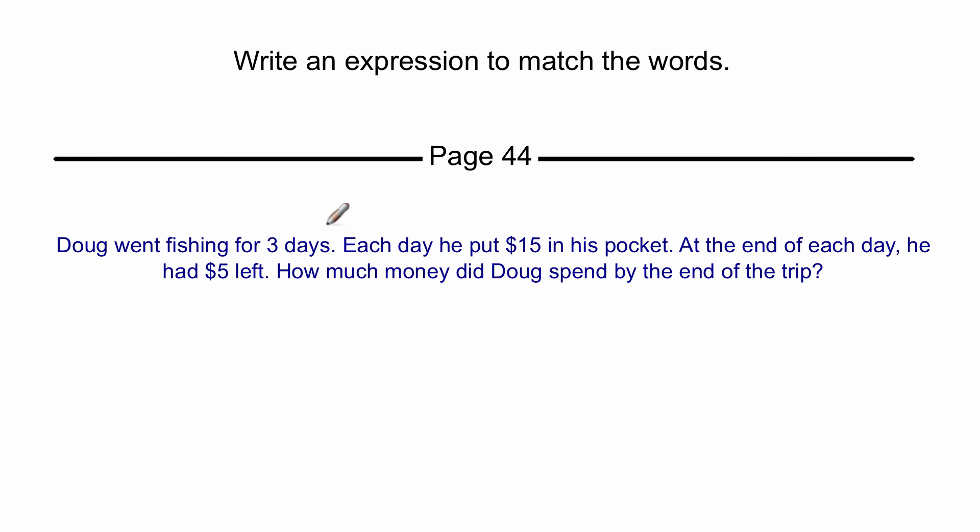Doug went fishing for three days. All right, so I know three is going to be one of my numbers. In fact, I'm going to get the highlighter out. Three is a number. Each day. Ooh, there's one of our trigger words. I think it means multiplication. Each day he puts $15, so 15 is going to be in the number sentence. At the end of the day, he had $5 left, or each day he had $5 left.